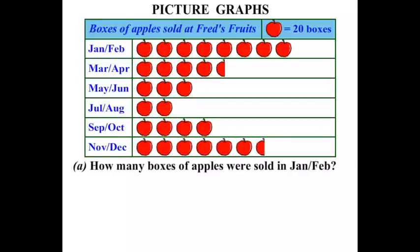In Part A, how many boxes of apples were sold in January-February? Well, in January-February, looking at our key, each apple is worth 20 boxes. Counting up: 20, 40, 60, 80, 100, 120, 140, 160. So we've got 160 boxes there in the Jan-Feb period.